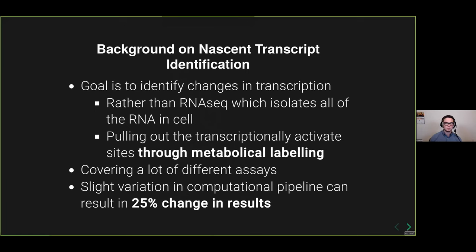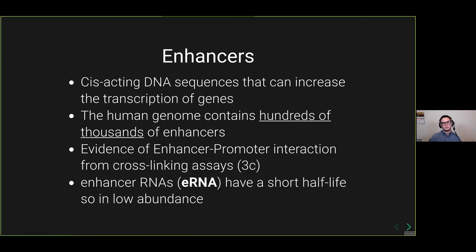The problem is that we're covering a lot of different assays, not just one or slight variations. We're covering lots of different chemistries and lots of different steps. And because of that, some slight variation in the computational pipeline can actually lead to a 25% change in the results of the transcript calling. We'll talk about why that is later.